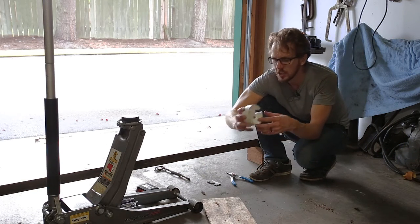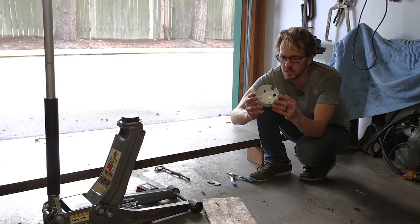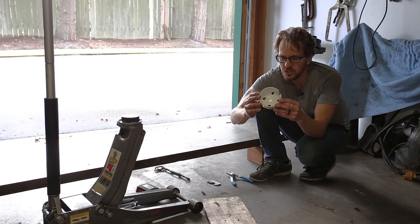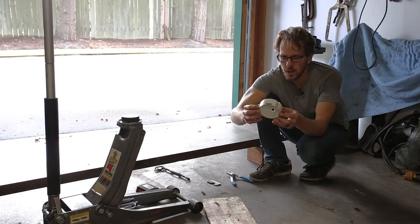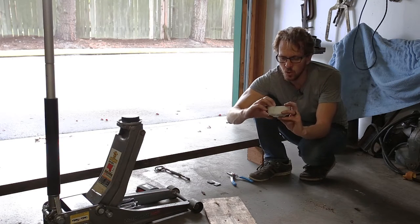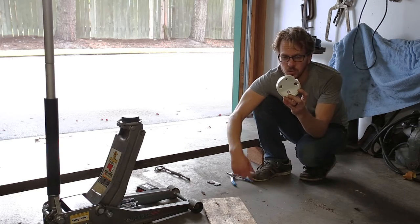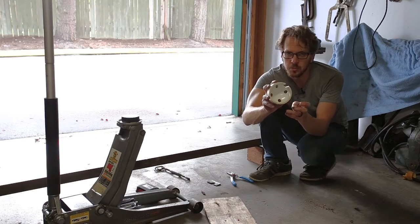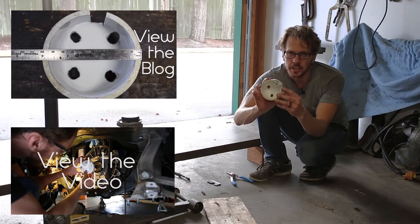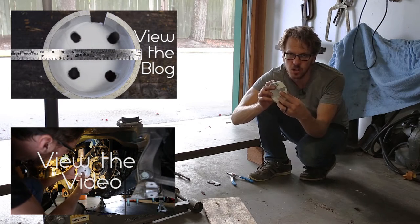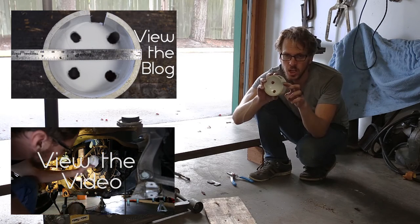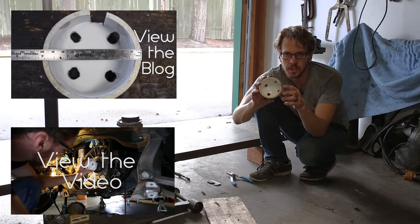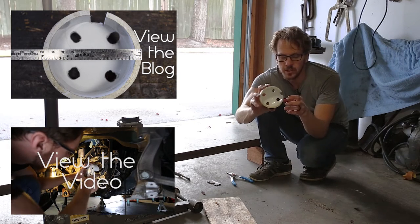Related to that is the rear main seal installing tool. This is just a PVC cap that I drilled four holes in. I used the bolts that attach the flywheel to tighten down this tool and press it into place. And I cut a depth gauge on there so that I could measure and make sure that the rear main seal was sunk down at the right depth.